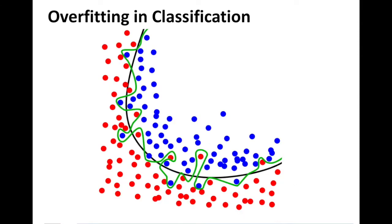So coming back to the classification world, overfitting in classification would look something like this. So there is a black curve and there is a green curve. So the black curve separates the two sets of points, right? So you can clearly see that there's blue on the top and red on the bottom.